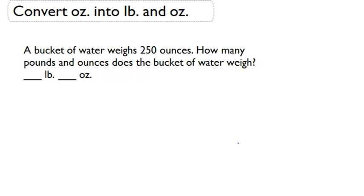We're going to take from this that we have 250 ounces and we want to put that in pounds and ounces. Now when we're going from ounces to pounds, since one pound is equal to 16 ounces,